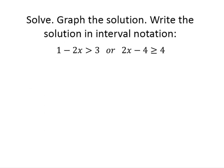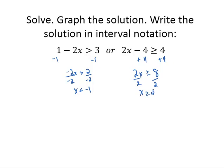Let's look at another one: 1 minus 2x is greater than 3, or 2x minus 4 is greater than or equal to 4. Solving each individually: subtracting 1 gives negative 2x is greater than 2; dividing by negative 2 and flipping the inequality symbol gives x is less than negative 1. For the second: adding 4 gives 2x is greater than or equal to 8, so x is greater than or equal to 4.